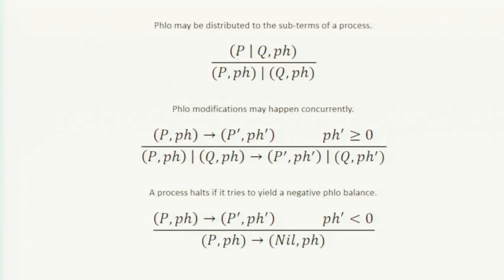The second rule says: if we have an expression p with a flow balance, and that term can reduce to p-prime altering its flow balance by deducting for the operation performed, and ph-prime is greater than zero, then I can do this modification to flow concurrently, witnessed by the other processes that hold a replica of that counter. Pretty straightforward.